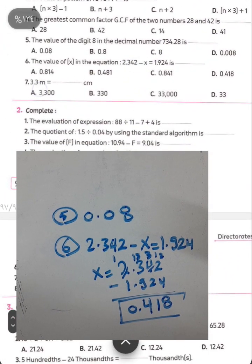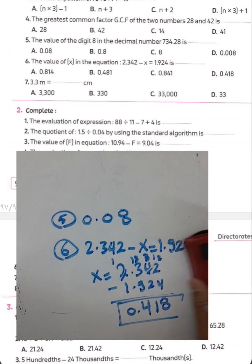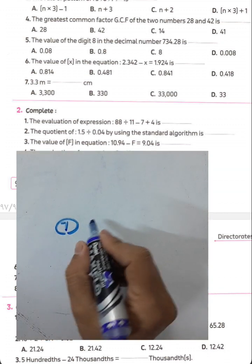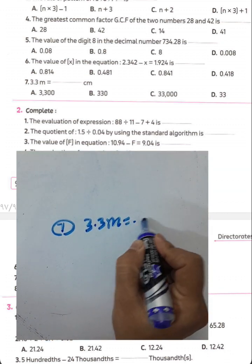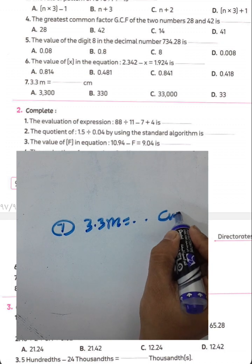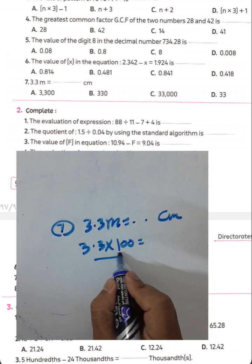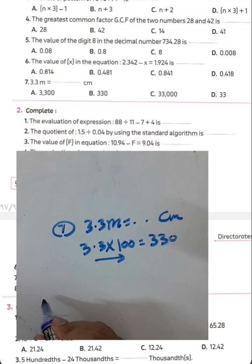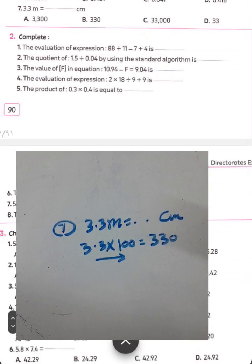Question seven: 3.3 meters — convert to centimeters by multiplying by 100. Move the decimal point two places to the right. The result will be 330 centimeters.